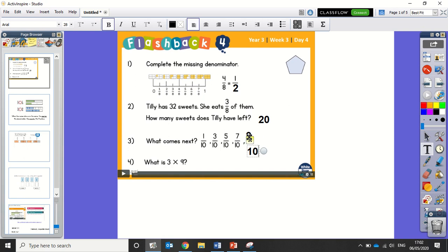And then the final question says, what is 3 times 9? Well, I could just do 3 times 10 and take away 3. So 3 times 10 is 30, take away 3 is 27.